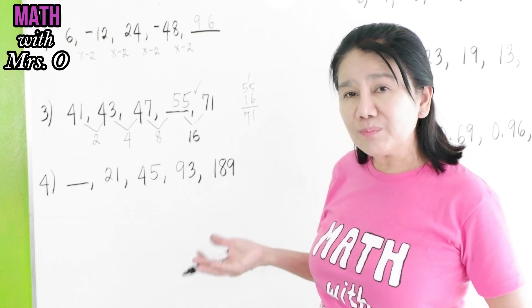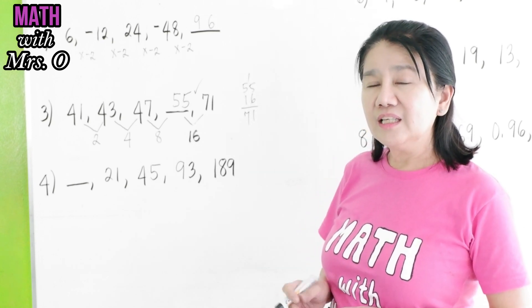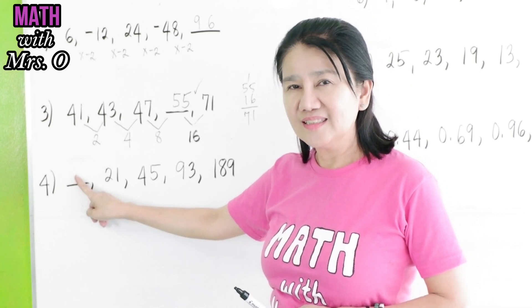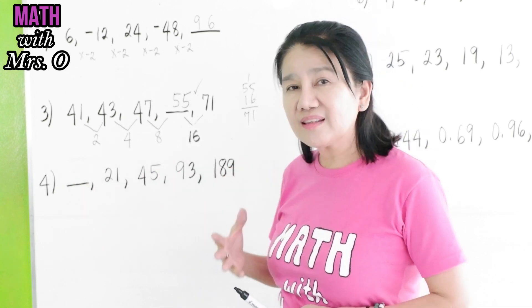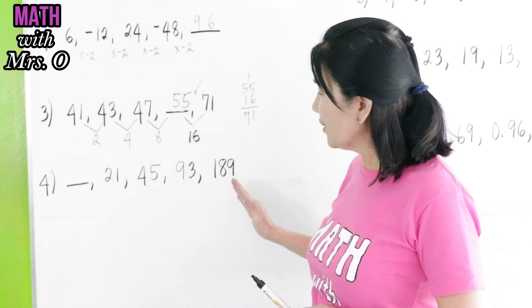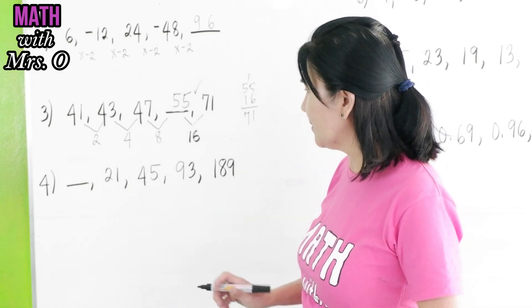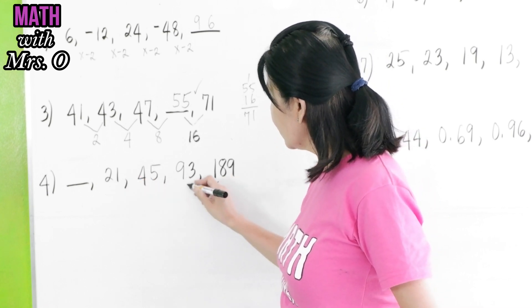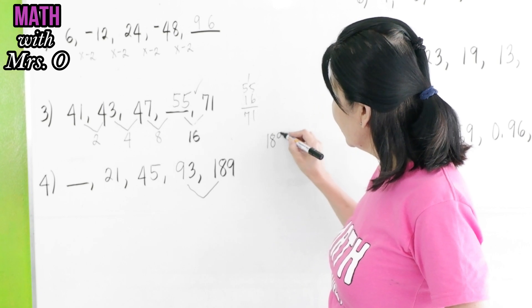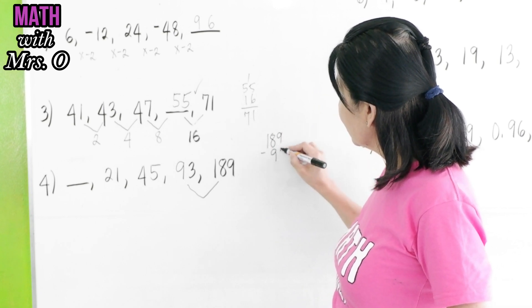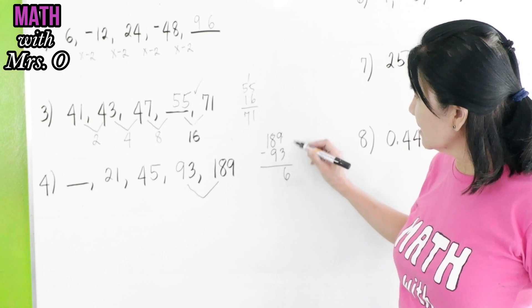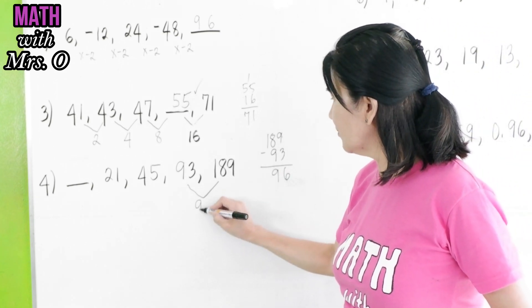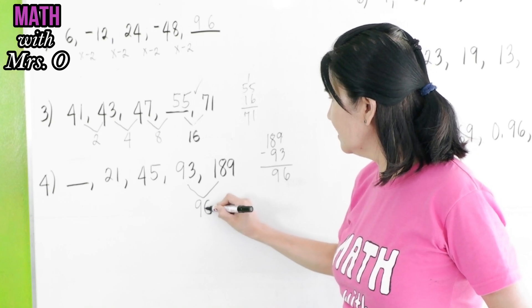Now, as you can see in problem number 4, the unknown number is at the beginning. If that is the case, you start from the end. You get the differences from the end. So, 189 minus 93 gives us a difference of 96 here.